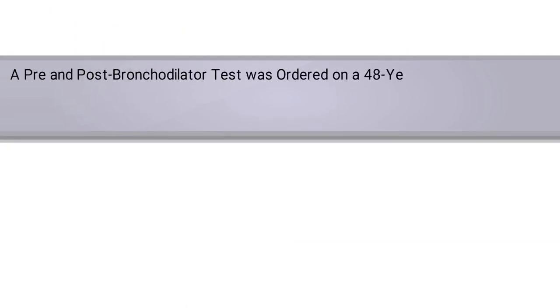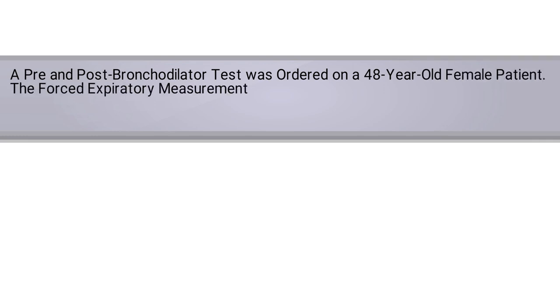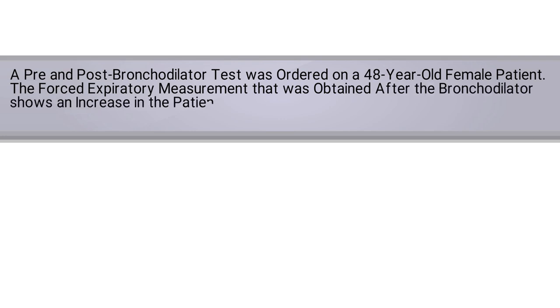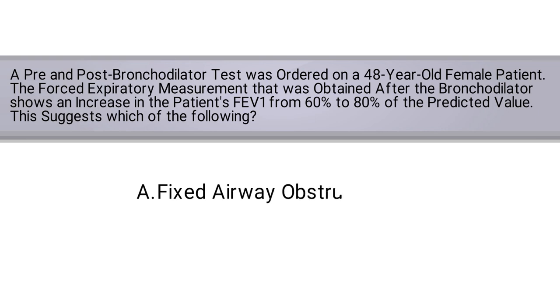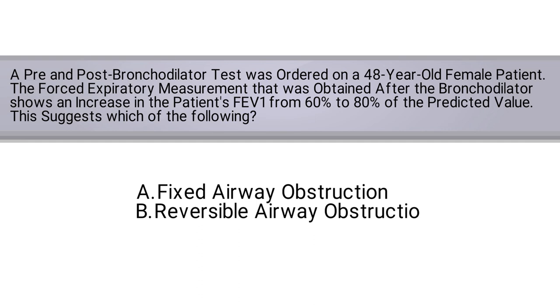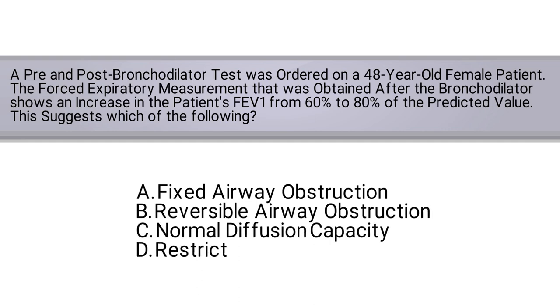A pre and post bronchodilator test was ordered on a 48-year-old female patient. The forced expiratory measurement obtained after the bronchodilator shows an increase in the patient's FEV1 from 60 to 80 percent of the predicted value. This suggests which of the following: A) a fixed airway obstruction, B) reversible airway obstruction, C) normal diffusion capacity, or D) a restrictive process.